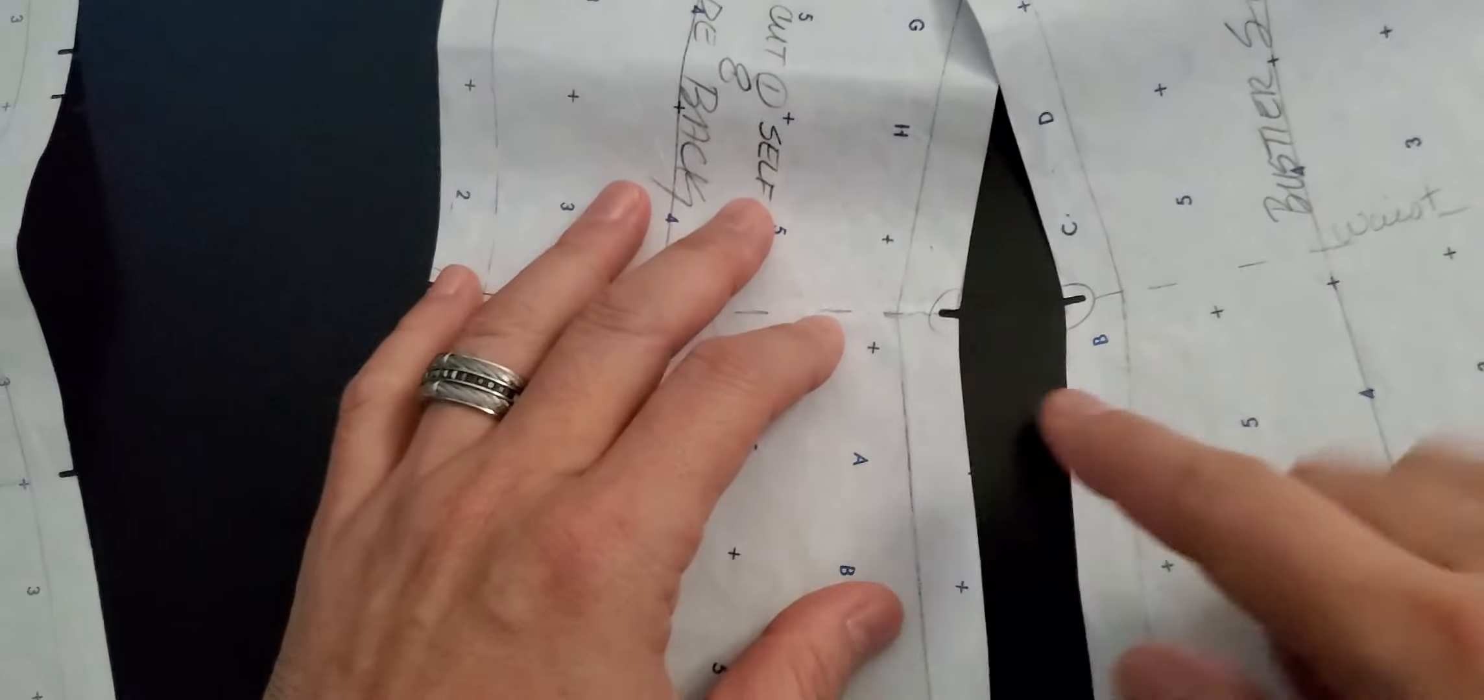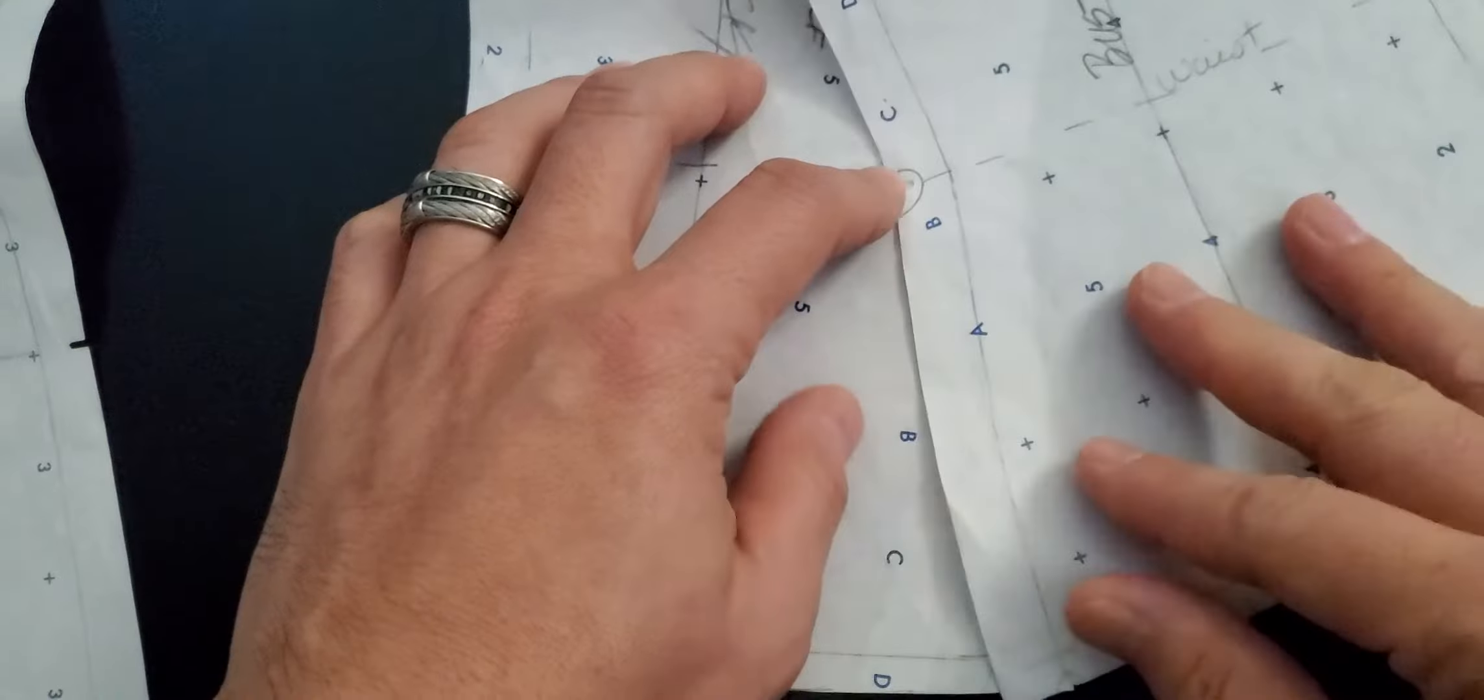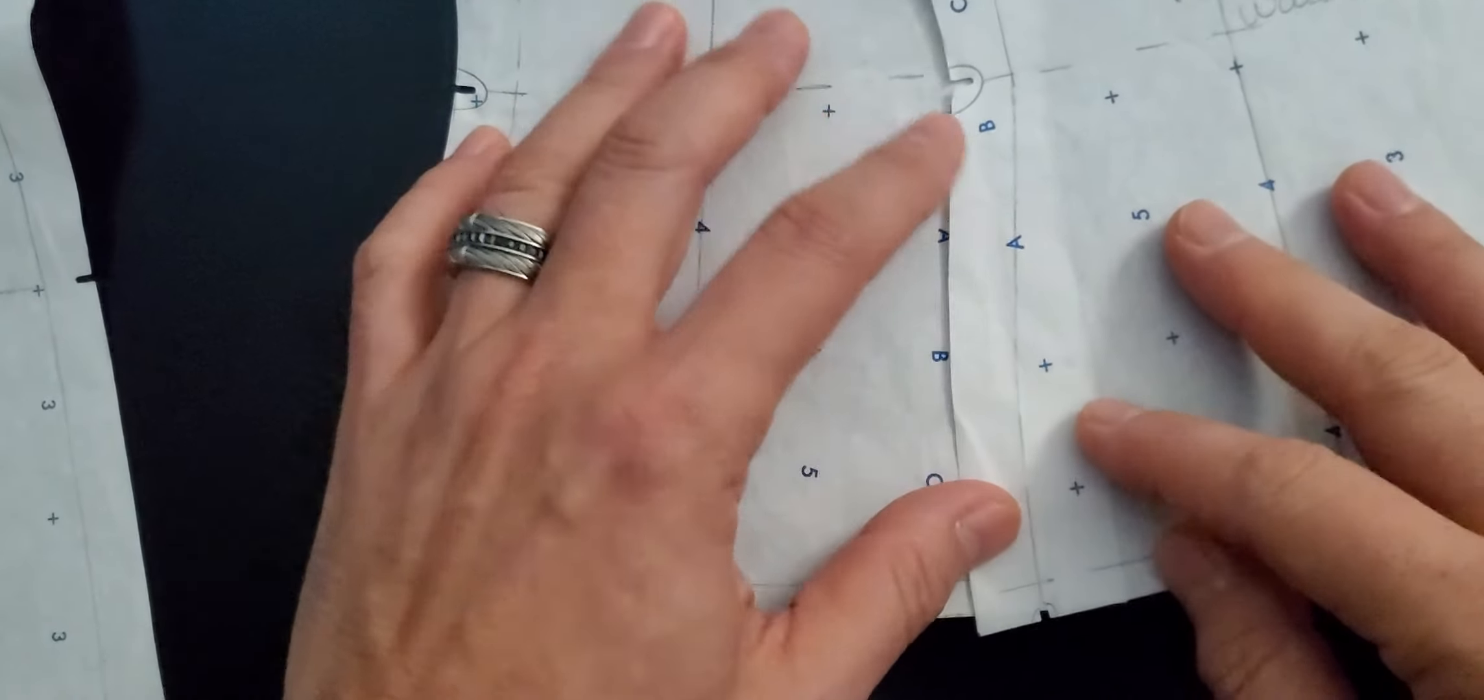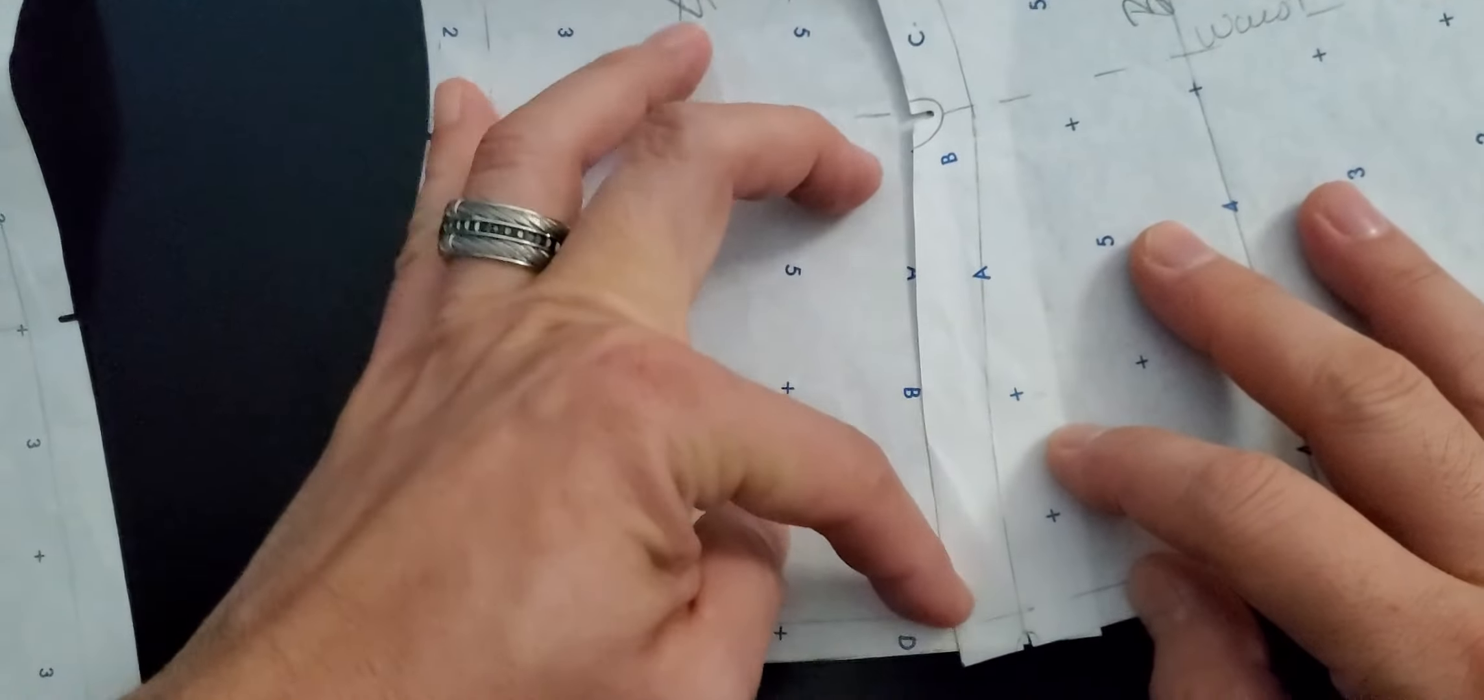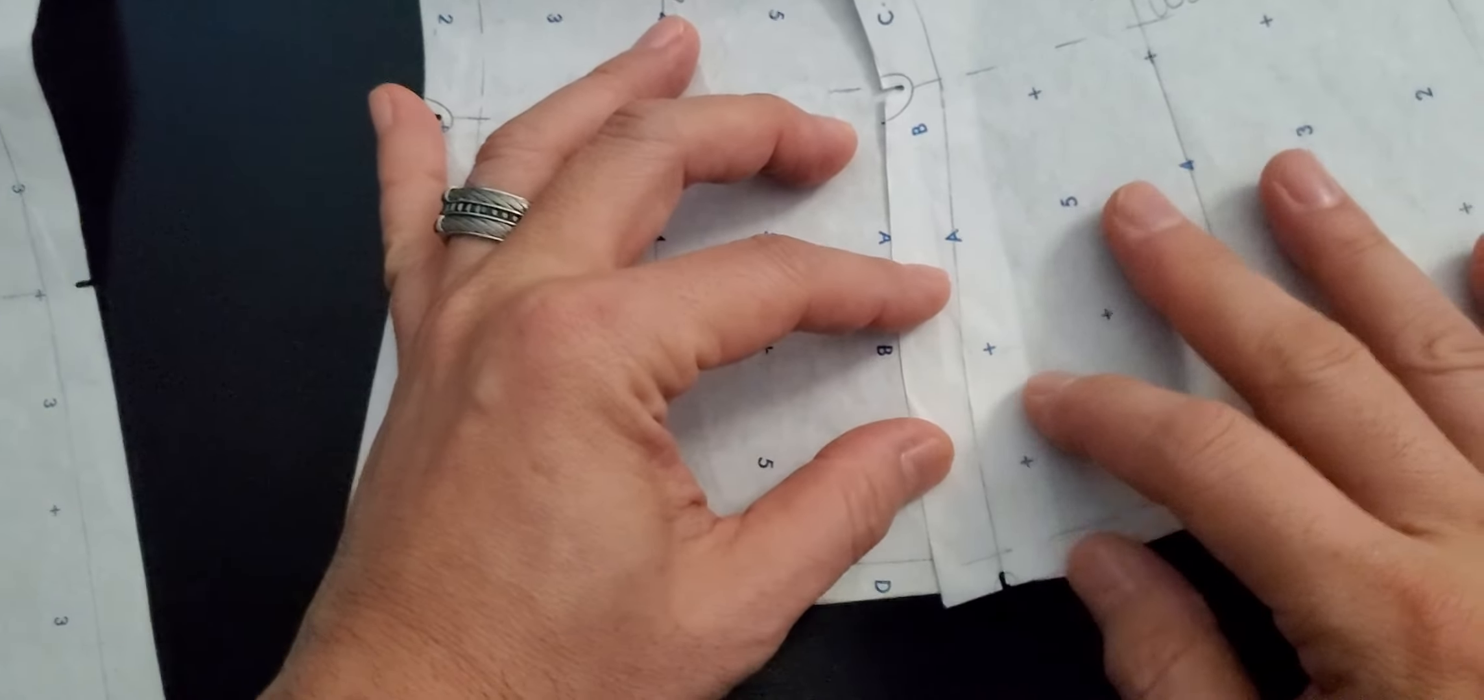And then afterwards, you want to make sure the bottom edge is smooth right here. So what you want to do is line up once you have the same length, line up at the bottom edge.